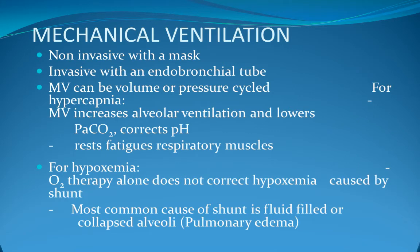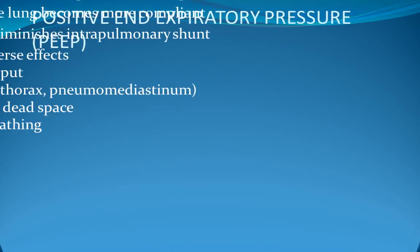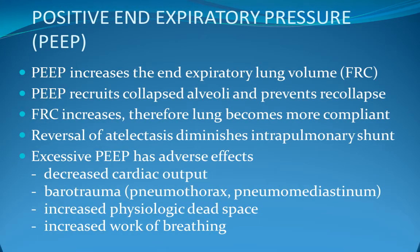Mechanical ventilation can be non-invasive with a mask or invasive with an endotracheal tube, and can be volume or pressure cycled for hypercapnia. Mechanical ventilation increases alveolar ventilation, lowers PCO2, corrects pH, and rests fatigued respiratory muscles. For hypoxemia, oxygen therapy alone does not correct hypoxemia caused by shunt — the most common causes of shunt being fluid-filled or collapsed alveoli and pulmonary edema. PEEP increases end-expiratory lung volume and functional residual capacity, recruits collapsed alveoli and prevents re-collapse, making the lung more compliant. Reversal of atelectasis diminishes intrapulmonary shunt. Excessive PEEP has adverse effects including decreased cardiac output, barotrauma, increased physiologic dead space, and increased work of breathing.